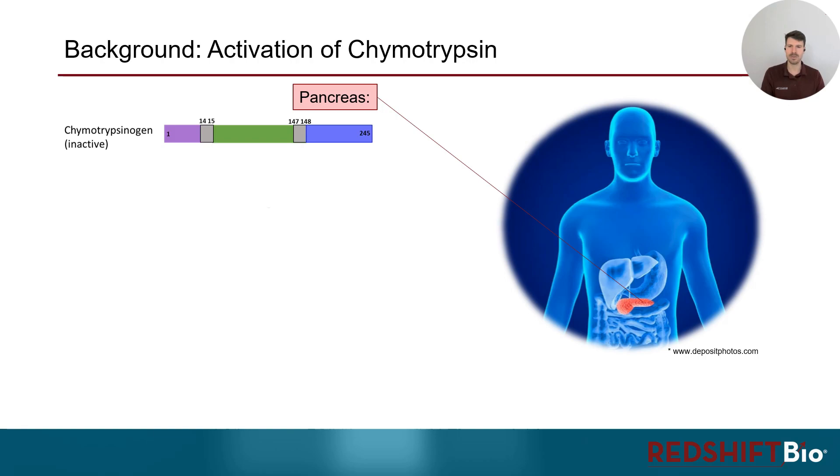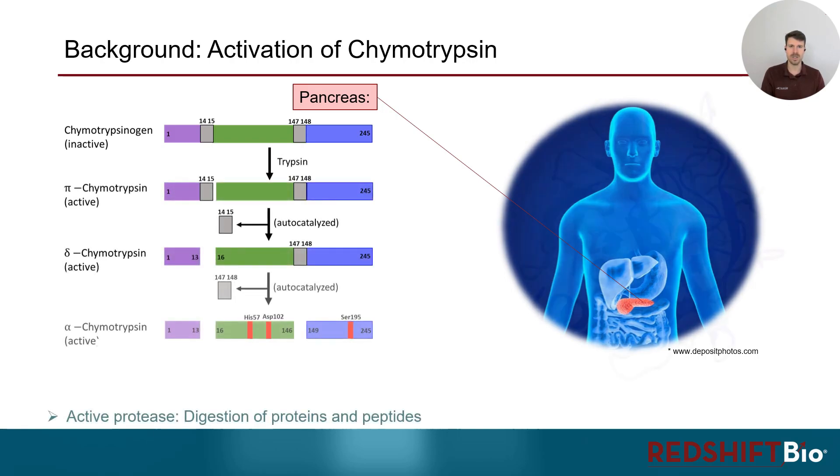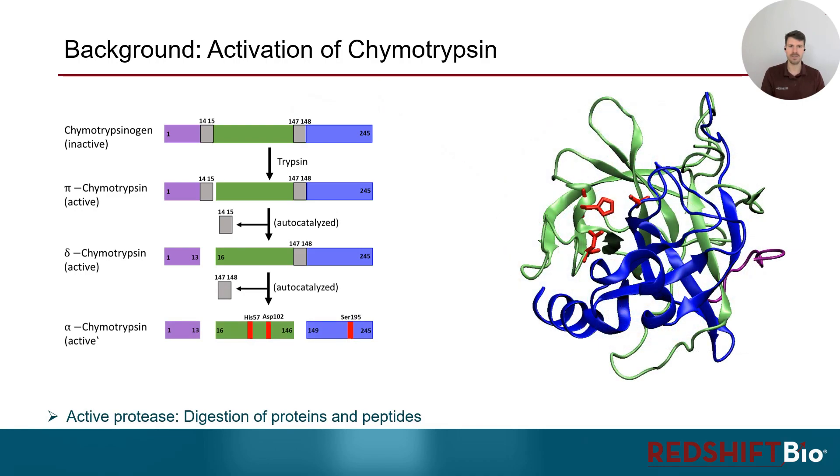Initiated by the presence of trypsin, two dipeptides are cut out of this protein which gives rise to formation of the active form that consists of three chains connected by disulfide bonds.